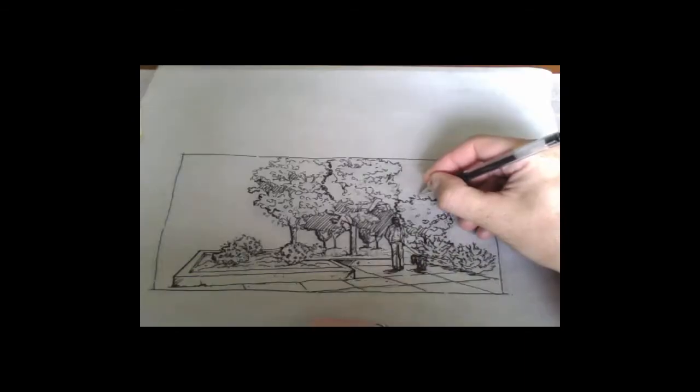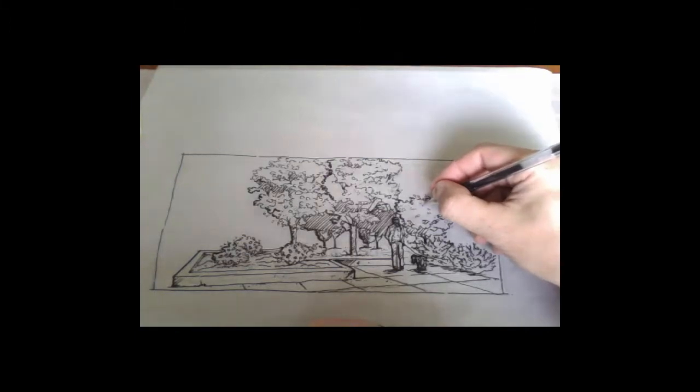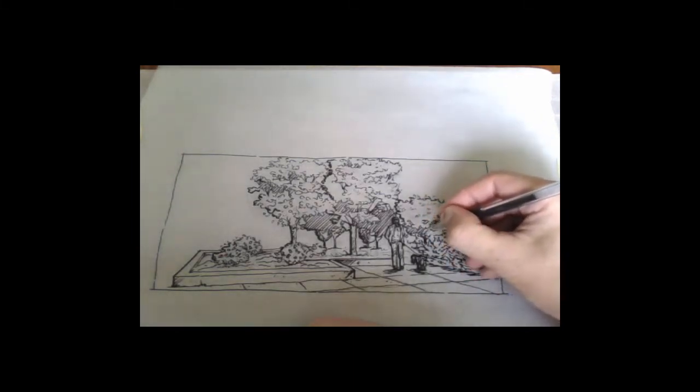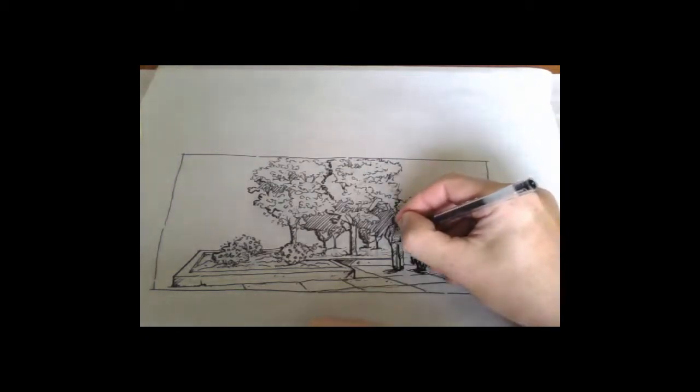Then I finished my border. I'm just adding a few stray leaves and some other elements into the tree. Just adding that final bit of detail with your finest pens. This is where you add your texture, wood grain, ground cover surface, the finest level of detail.